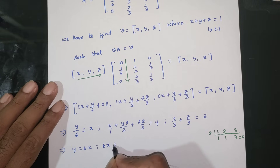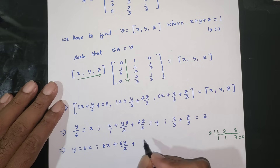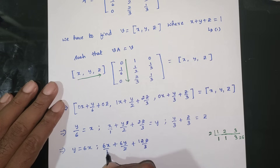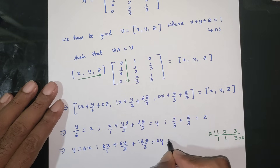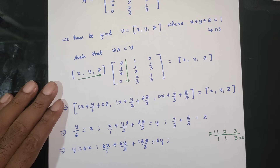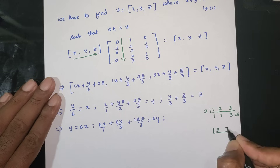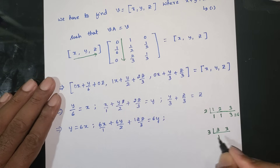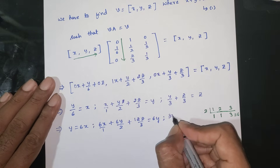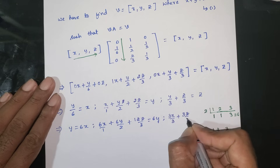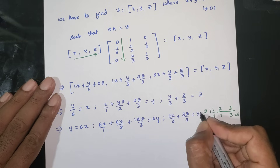Multiplying through by 6: 6x equals y (equation from 1). For equation 3, multiplying by 3: y plus z equals 3z, giving y equals 2z.